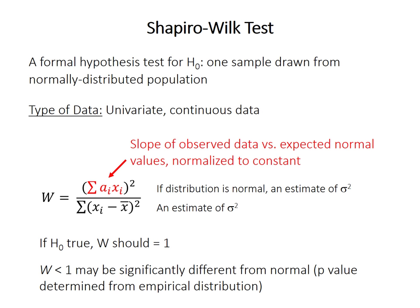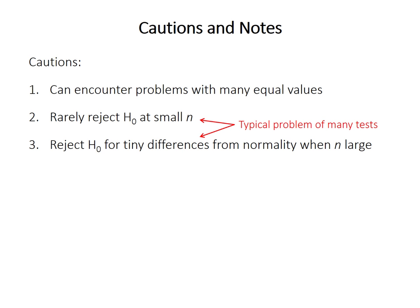A couple of cautions. First, the test can run into problems if your data contain many equal values. There are other tests of normality which we won't cover, and some of them might perform better in that situation. The test also has little power to reject the null hypothesis when the sample size is small, and it's very likely to reject the null hypothesis even for tiny differences from normality when the sample size is large. But these two are typical problems of significance testing in general, so make sure to assess the real-world importance independent of statistical significance.